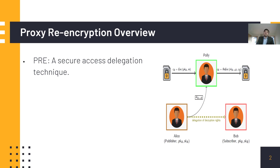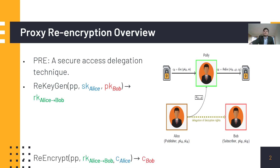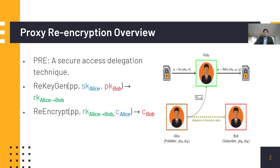Let's start with the syntax of a PRE scheme. Apart from the regular procedures found in a public key encryption scheme — such as keygen, encrypt, and decrypt — we have two additional procedures: re-keygen and re-encrypt. The re-keygen takes in the public parameters, the secret key of Alice, and the public key of Bob, and generates a re-encryption key. The re-encrypt algorithm then takes the re-encryption key and Alice's ciphertext and transforms it into a ciphertext that can be decrypted under Bob's private key.